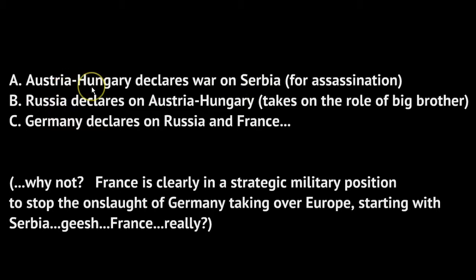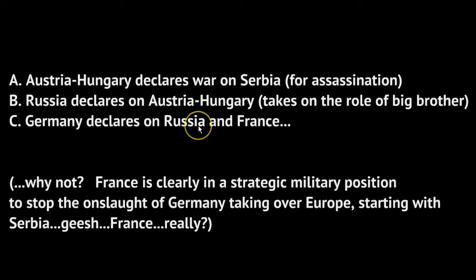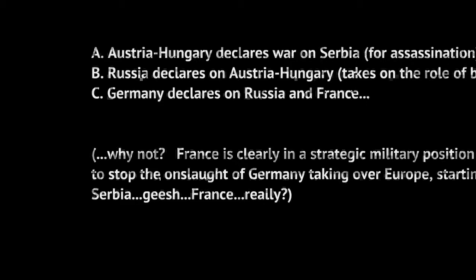Russia claims they're trying to be the big brother protecting smaller nations, but probably in reality they wanted to claim Austria-Hungary as part of Russia. Germany, having a secret alliance with Austria-Hungary, declares war on Russia. Germany then also declares war on France, clear on the western side of Europe — which geographically had nothing to do with the conflict. France, however, had an alliance with Russia, which meant an alliance with Serbia. Germany knew if they declared war on Russia they'd eventually have to declare on France, so they just cut to the chase.